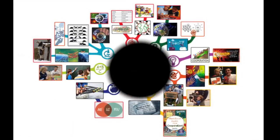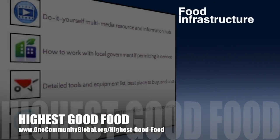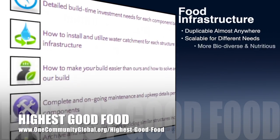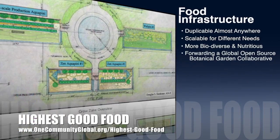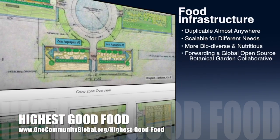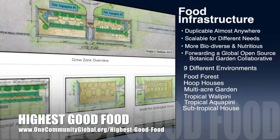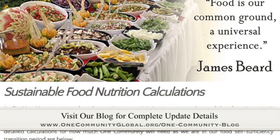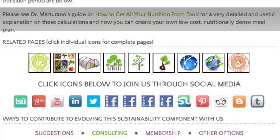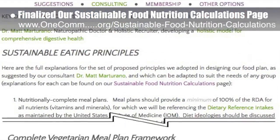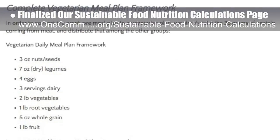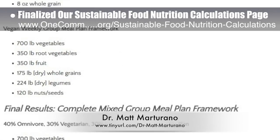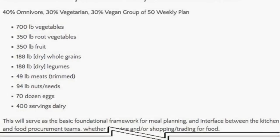One Community's approach to highest good food is duplicable almost anywhere, scalable for different needs, more biodiverse and nutritious, part of forwarding a global open source botanical garden collaborative, and includes nine different free shared and duplicable growing environments. As part of the development of our food self-sufficiency transition plan, this week we finalized and are launching our sustainable food nutrition calculations page to the public, based on contributions by naturopathic doctor Matt Martrano, creator of the coherent model for comprehensive digestive health.